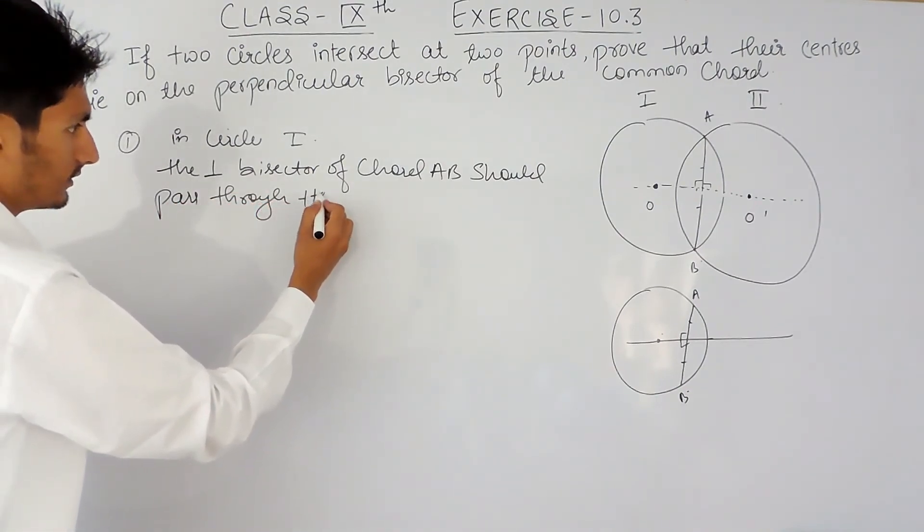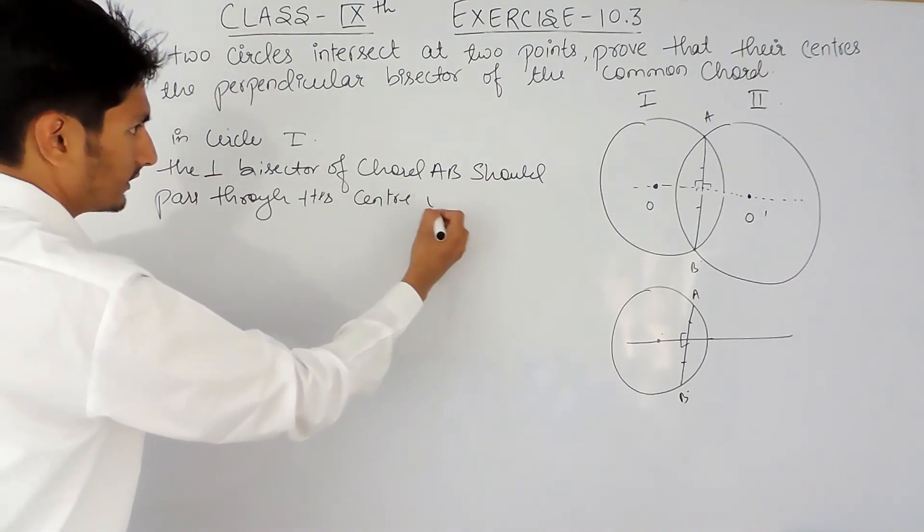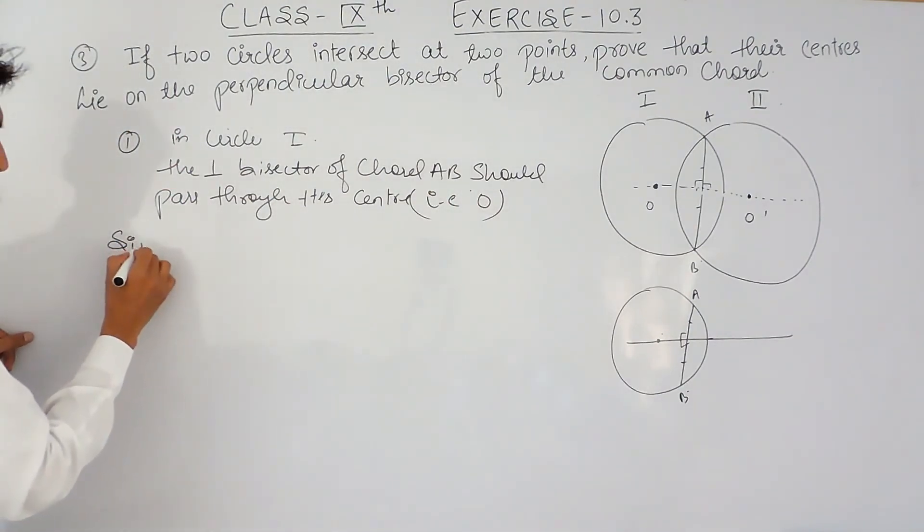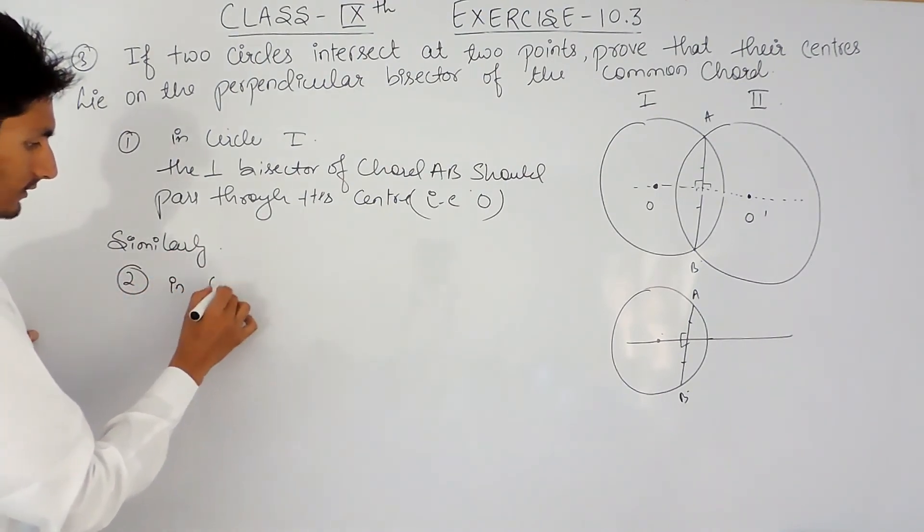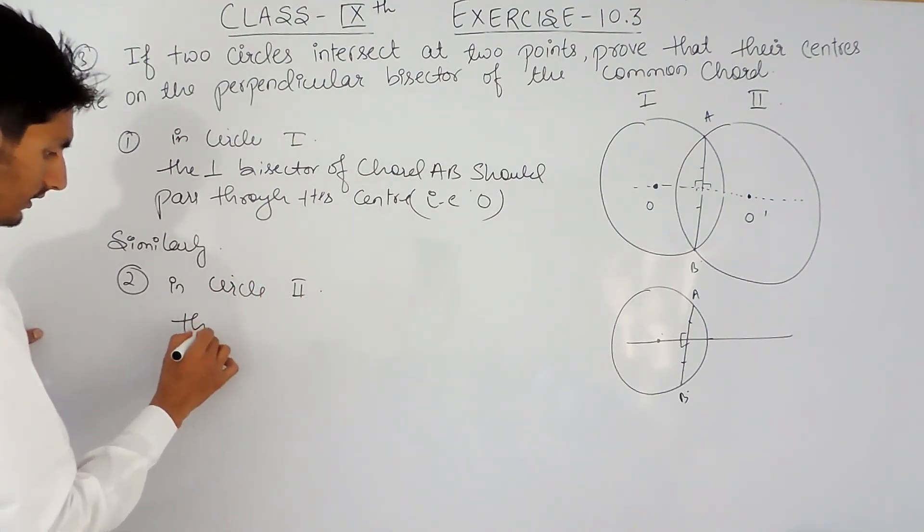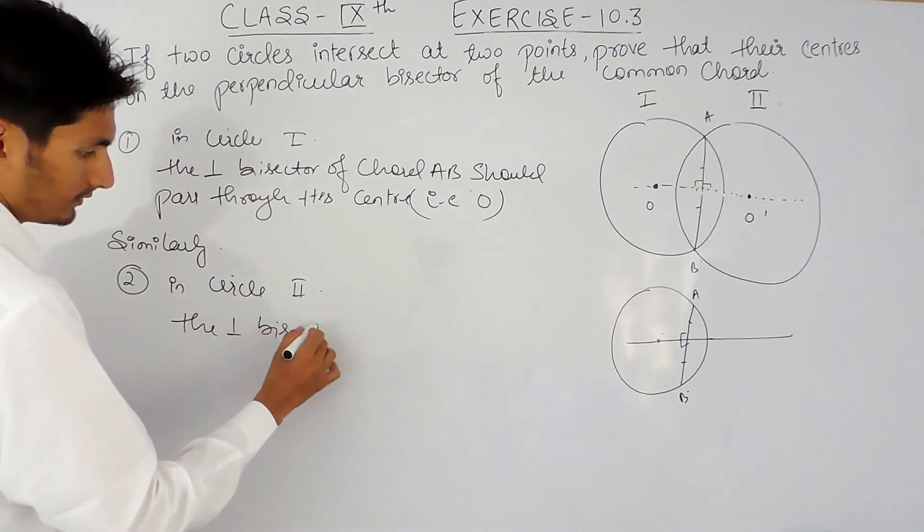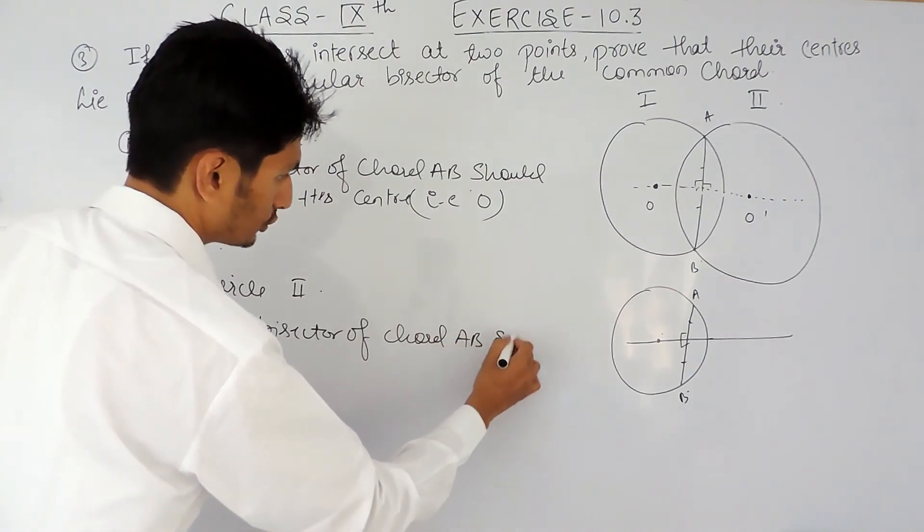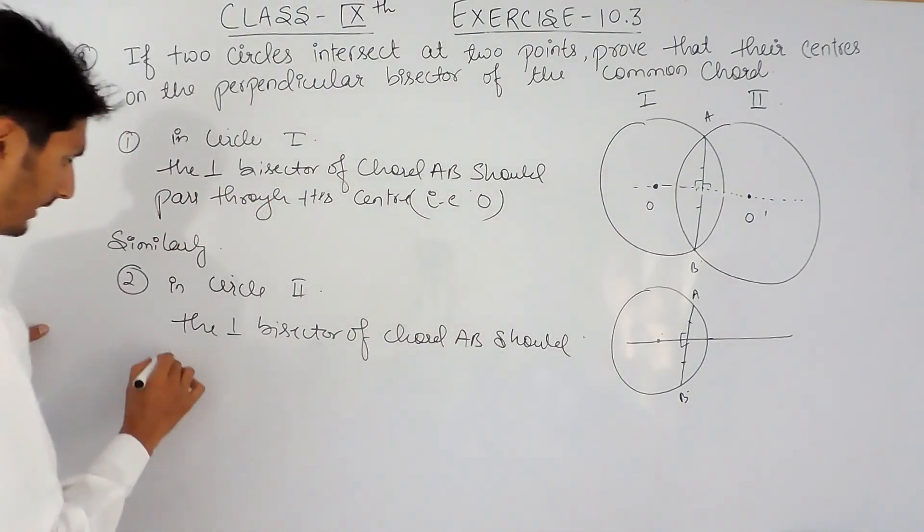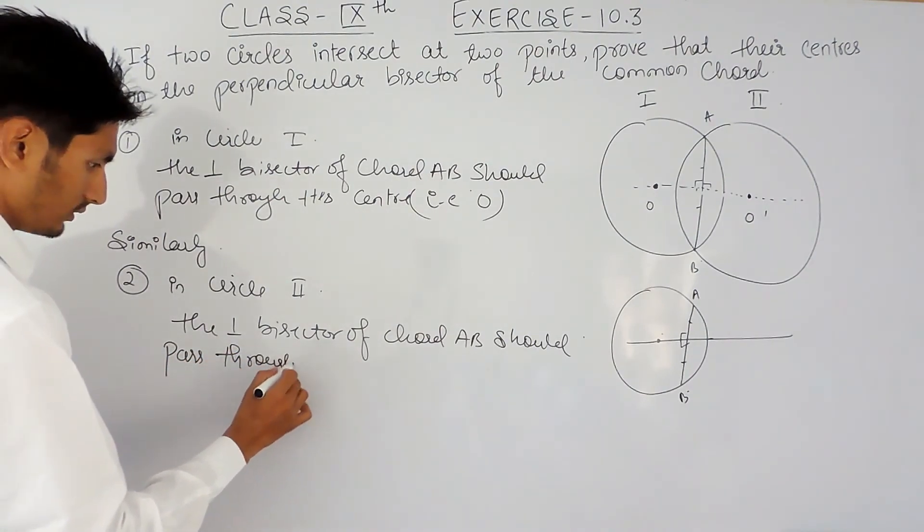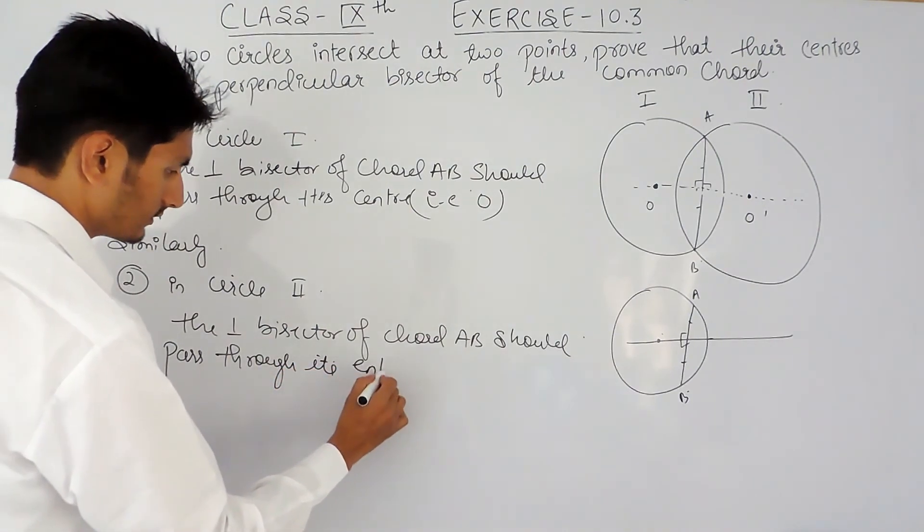In circle first, the perpendicular bisector of chord AB should pass through its center, that is O. And similarly, in the second part, in circle second, the perpendicular bisector of chord AB should pass through its center.